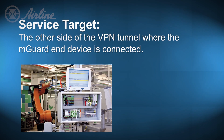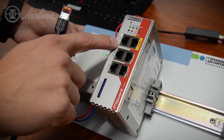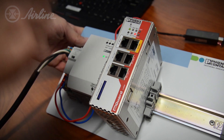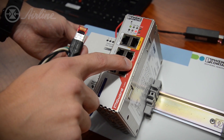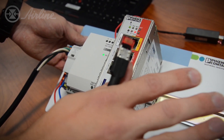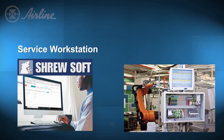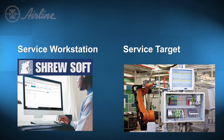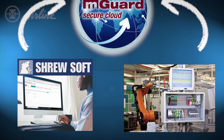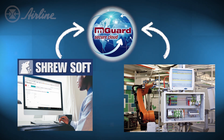The Service Target is the other side of the VPN tunnel, where the M-Guard device is connected. For this configuration video, we will focus on setting up an M-Guard as the Service Target to tunnel into the other side of the Secure Cloud tunnel. Think of the Service Workstation as ShrewSoft and the Service Target as the M-Guard you want to remote into. Once both of these are connected to the Secure Cloud, you will have a full bridge of communication from your computer to the M-Guard.